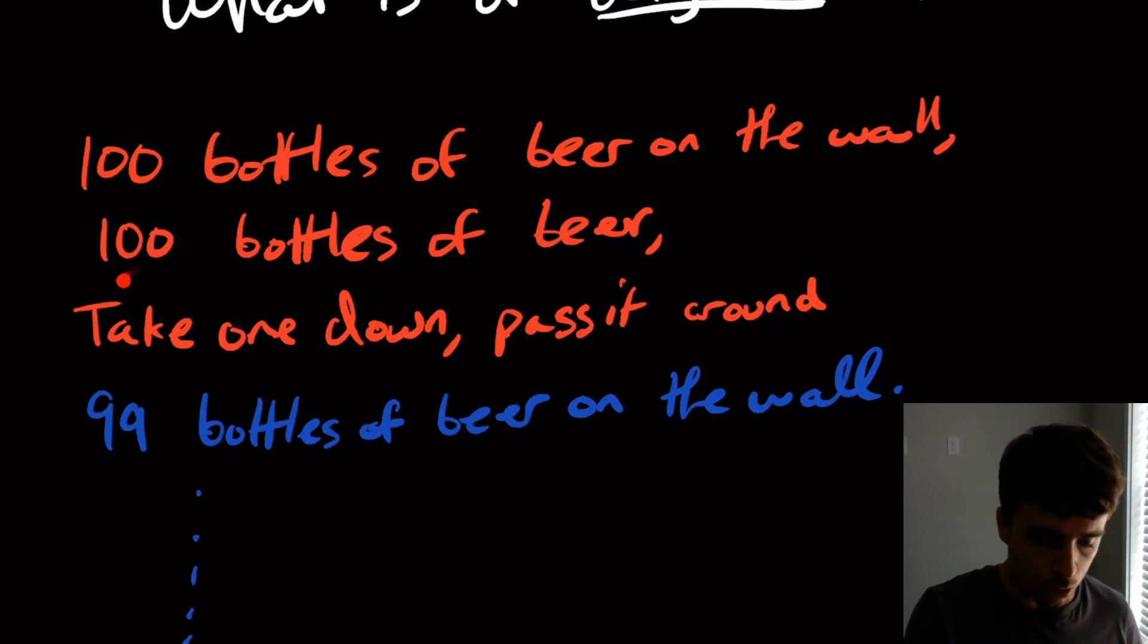So then the next line would be 99 bottles of beer on the wall. And then we continue like this. So then the next line would be 99 bottles of beer. Take one down. Pass it around. Then we go to 98 and 97, etc.